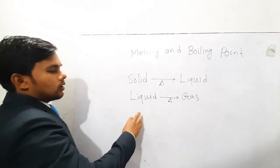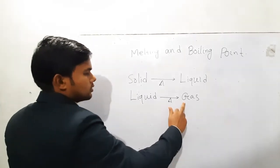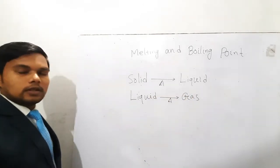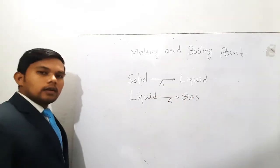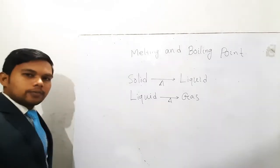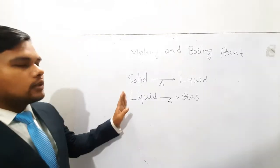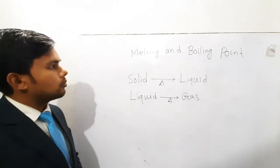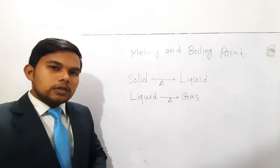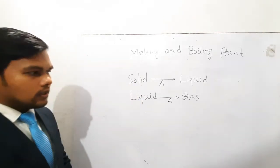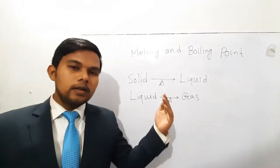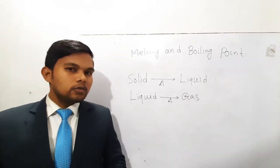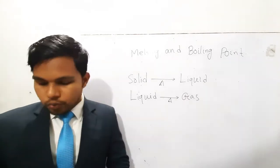At normal pressure, when a liquid substance converts to a gaseous substance, that temperature is called the boiling point of that liquid. The boiling point and melting point of a pure substance is a fixed temperature. But in the case of an impure substance, it is a range. If the boiling or melting point deviates from the standard value, we can easily tell that the substance is not pure.